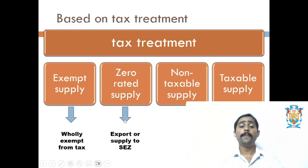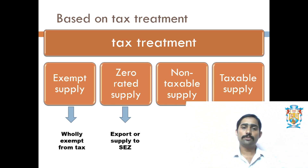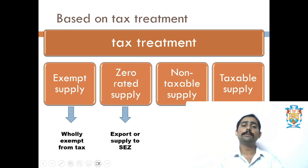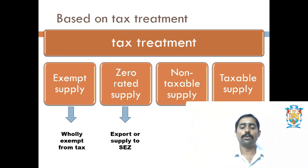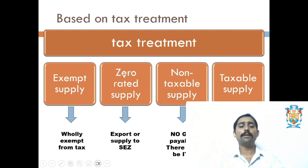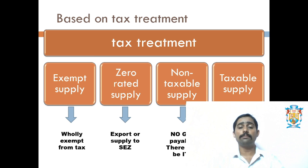Zero-rated supply includes exports, supply to SEZ (Free Trade Zones), and supply to export-oriented units — all considered as deemed exports. Deemed export is where goods are given to SEZ and those people sell them to a foreign country, so indirectly we are exporting to the foreign country. Non-taxable supply covers items not coming under the first two categories — products that are not taxable under GST and not covered under the GST definition.